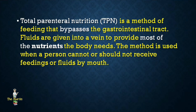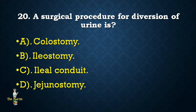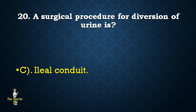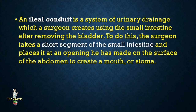Next question: A surgical procedure for diversion of urine is — colostomy, ileostomy, ileal conduit, or jejunostomy? Correct answer is ileal conduit. An ileal conduit is a urinary drainage system where a surgeon uses a short segment of small intestine, placed at an opening on the abdominal surface, to create a stoma through which urine passes.